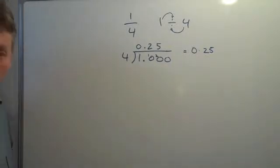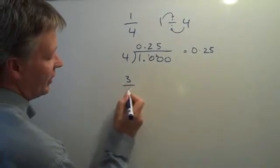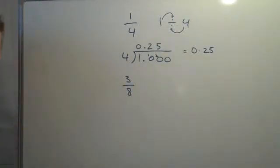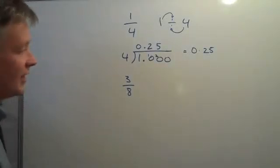So let's say we have something that was a slightly more difficult fraction. Let's say we've got 3 8s, and we want to calculate that as a decimal.